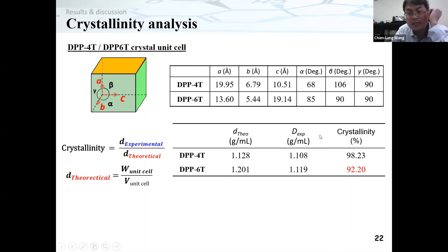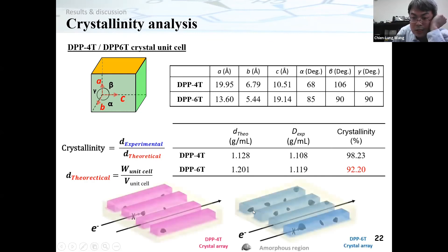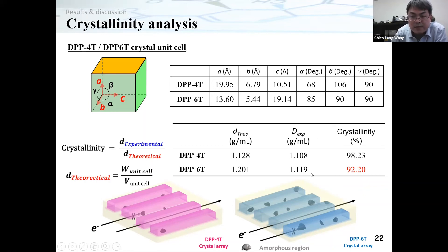We found that the crystallinity of the shorter molecule is quite high — 98%. But the crystallinity of the longer molecule is lower. This allows us to generate an illustration showing that when you extend the conjugation length of the molecule, you give it more chance to form amorphous domains. The amorphous domains then become a barrier for charges to move smoothly along the charge transport channel. We can confirm that molecules with longer conjugation lengths contain more rotatable single bonds, making it more difficult for them to crystallize, so their crystal arrays contain more amorphous domains.